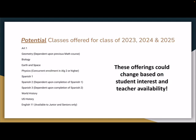Potential classes offered for the class of 2023, 2024, and 2025 — all of these classes are dependent upon students' interest, teacher availability, and us actually getting enough interest to run a course. You see options ranging from Art 1 for incoming freshmen, to Biology, Spanish, and World History for sophomores or juniors. You can see a plethora of different classes available, and again, these are dependent upon students' enrollment and interest.